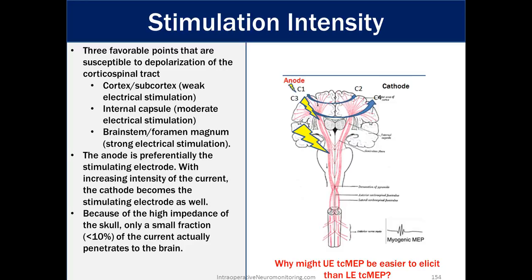Stimulation intensity again. Three favorable points that are susceptible to depolarization of the cortical spinal track is the cortex and subcortex with weak electrical stimulation, the internal capsule with moderate electrical stimulation, and the brain stem and foramen magnum with very strong electrical stimulation. So what we're saying here is intensity and duration dependence. You can have some pretty deep stimulation affecting white tracks pretty deep down there. So if you're using MEPs on a craniotomy or thalamic lesions, you have to be aware if you are stimulating too deep, or at least you have to take that into consideration.